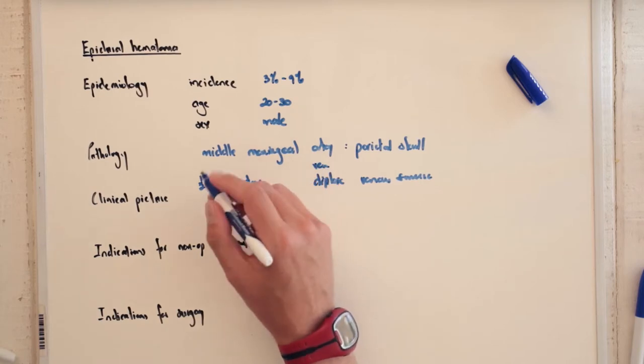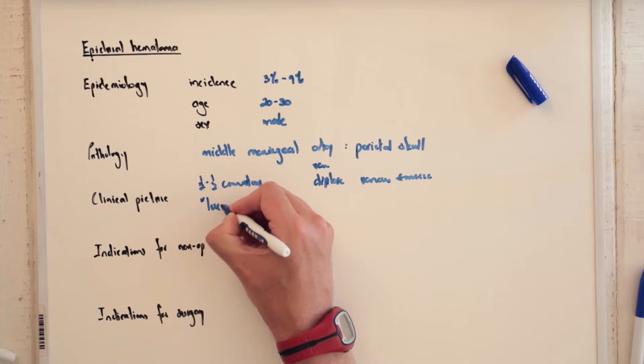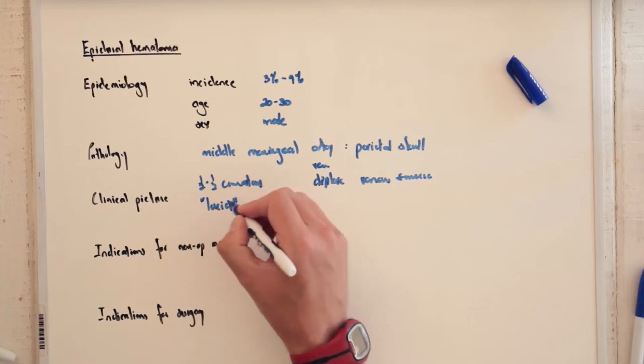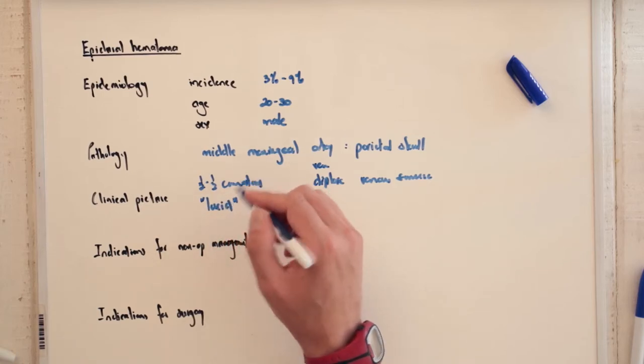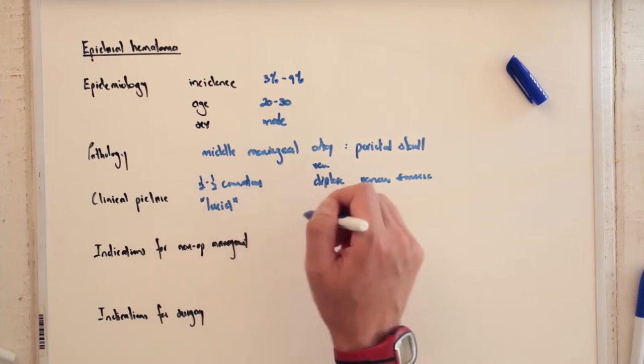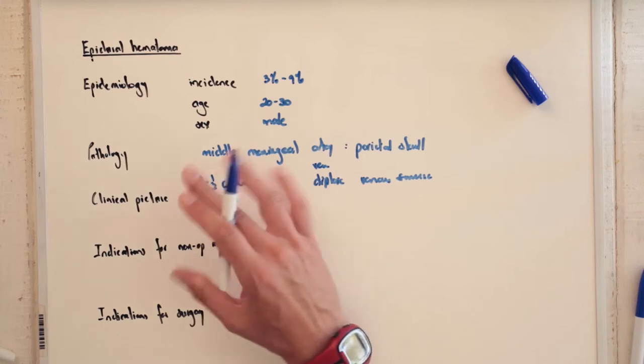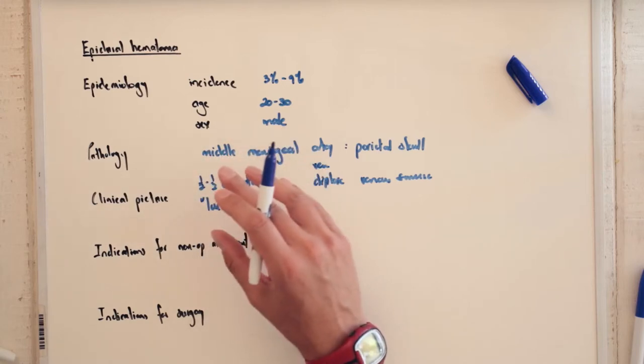And what's important about these is half of these patients with extradural hematoma will have this what is called the lucid period, where they have initial loss of consciousness, wake up and have this lucid period, and then actually have their neurological state deteriorate. Up to half of patients will undergo this typical clinical picture.